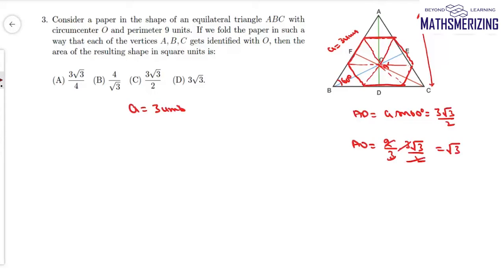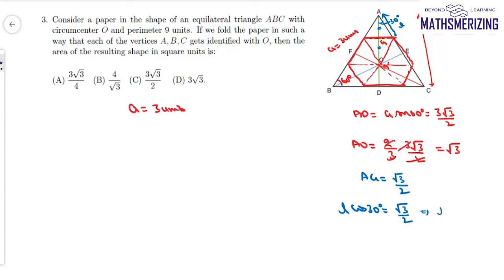Let's call this point G. Since AG equals OG, we have AG = √3/2. The half-angle here is 30°. If the side length of the small triangle is L, then L cos 30° = √3/2, which gives L = 1. So the small folded triangle is equilateral with side 1.